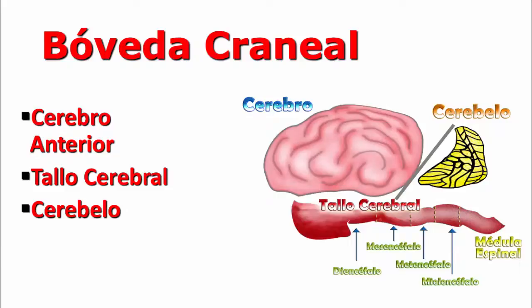El cerebro anterior, el tallo cerebral y el cerebelo. El cerebro anterior constará de todo lo que son las circunvoluciones cerebrales. A esto se llama el telencéfalo: los lóbulos frontales, parietales, temporales y occipitales.